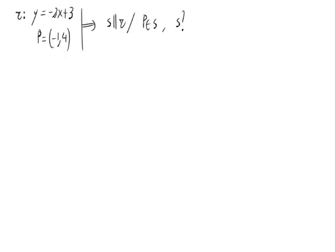Given the straight line R, Y equals minus 2X plus 3, we can see that it is expressed in its explicit form, and given the point P, minus 1, 4.